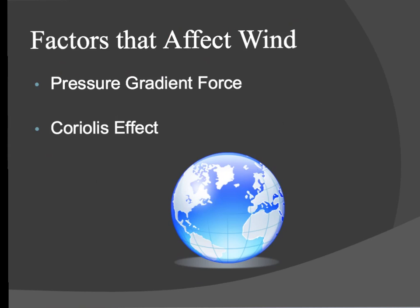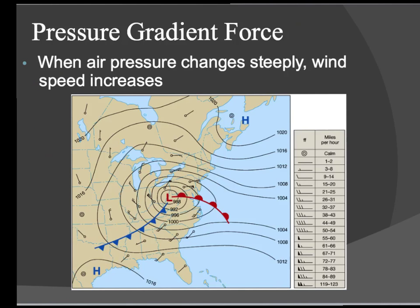Two factors we're going to talk about that can affect wind are the pressure gradient force and the Coriolis effect. The pressure gradient force has to do with air pressure, and a gradient is just a change over some distance of land or anything like that. So when air pressure changes steeply or really quickly, our wind speed increases. We know when air pressure changes quickly because if we see a lot of isobars next to each other, then our wind speed will increase. The closer the isobars, the higher the wind speed.